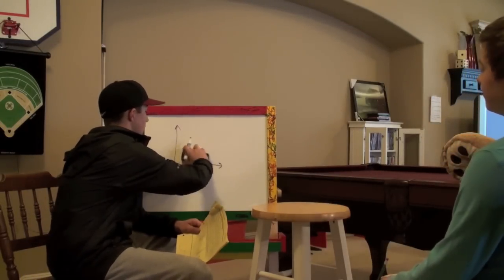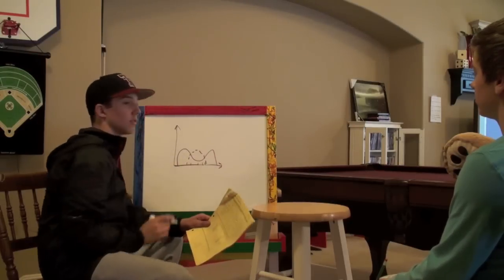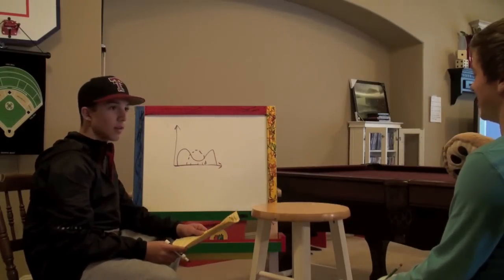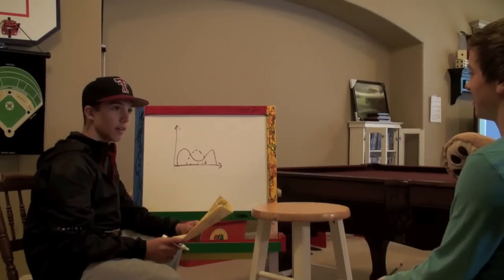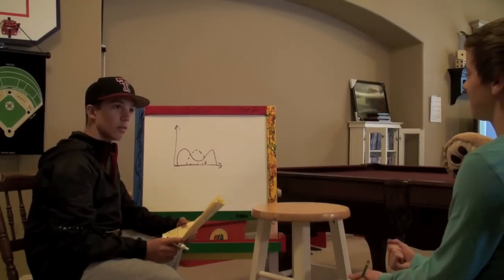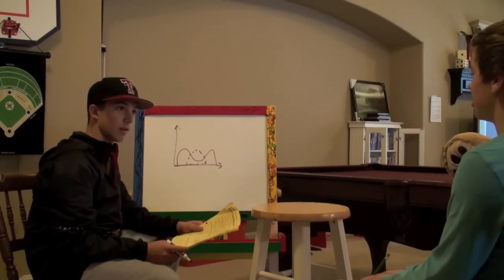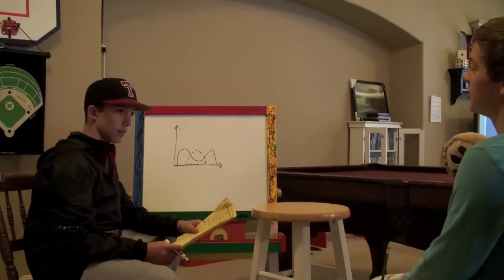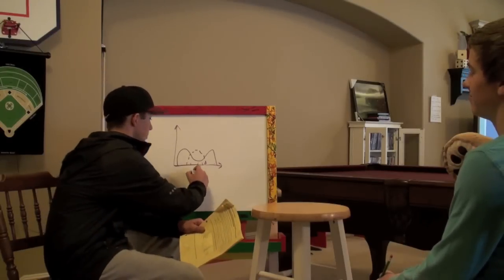And the last type of graph is this. What does that represent? Disruptive selection. Very good. And disruptive selection is when both extremes are best suited for the environment. Very good. So both.